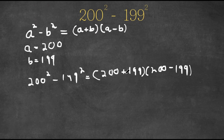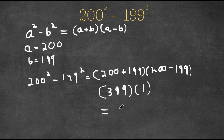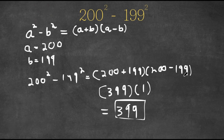Now 200 plus 199 is going to be 399. So now we have 399 times 200 minus 199. Well, these two only have a difference of one. So we simply have 399 times 1, and anything times 1 is itself. So this equals 399, meaning the answer to this problem is 399. And it's that simple.